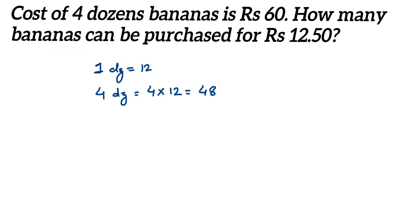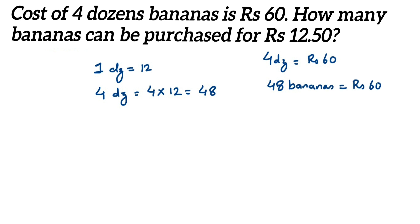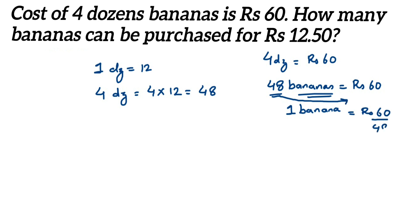So 48 bananas are there in four dozen. Now we know that for four dozen the cost is rupees 60, which means 48 bananas cost rupees 60. Now we have to find out the cost of one banana. We want to find out the value of one banana, so transpose 48 to the other side of the equation — this will be equal to rupees 60 divided by 48.